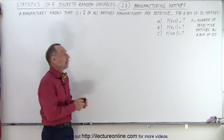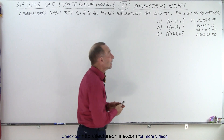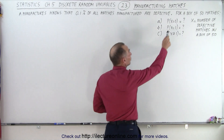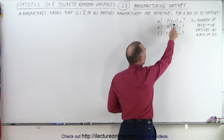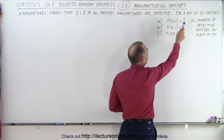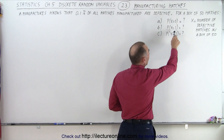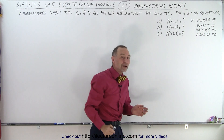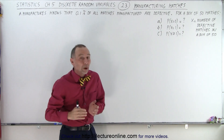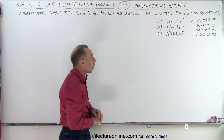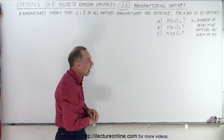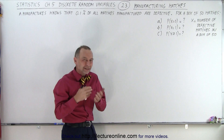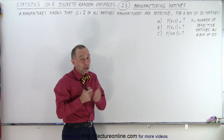What would be the probability that zero of the matches in the box are defective? How about one in the box is defective, or one or more of the matches are defective? How would we calculate that?